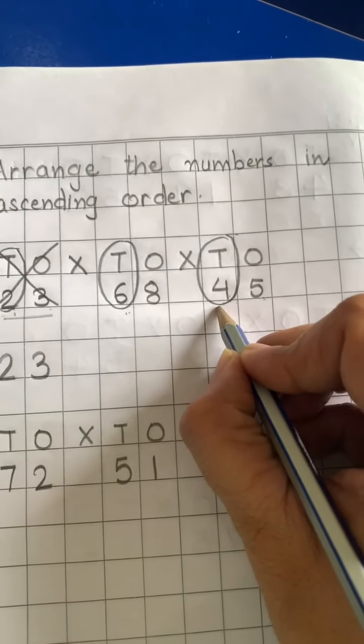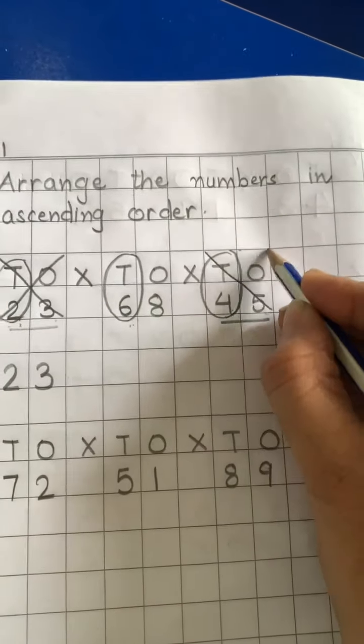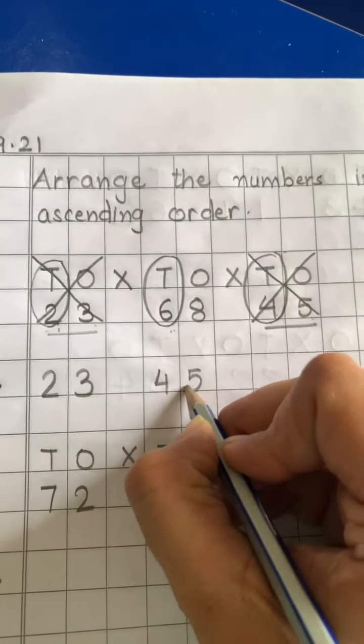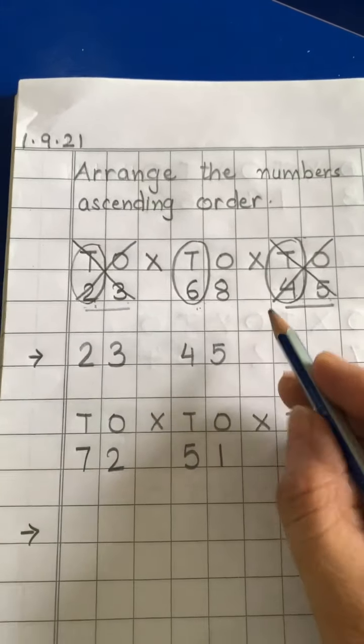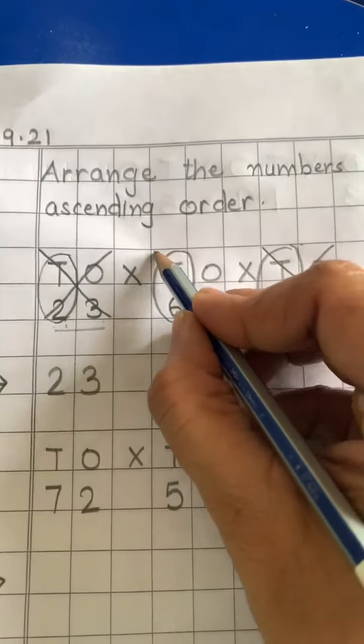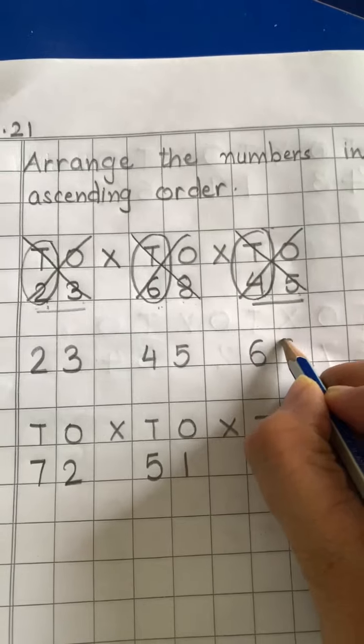So, 45 number is smallest number. Cross karo 45 ko. And right 45 here. Which number is left? 68 raha hai? Okay. Now cross number 68. Now right number 68. Here.